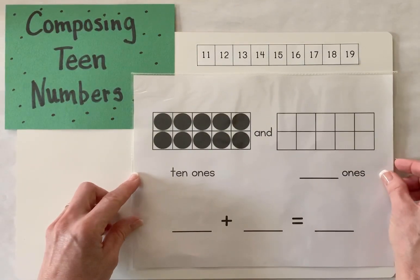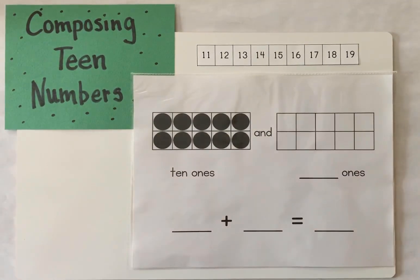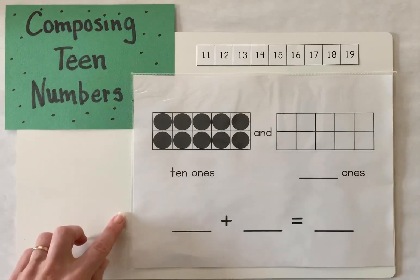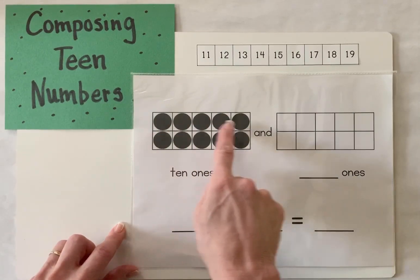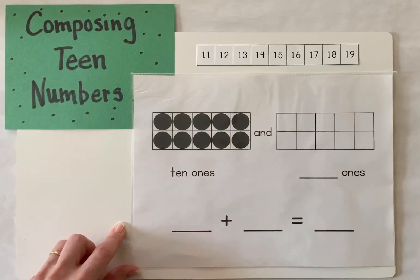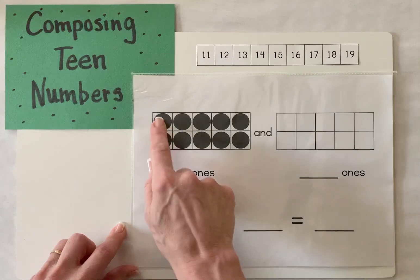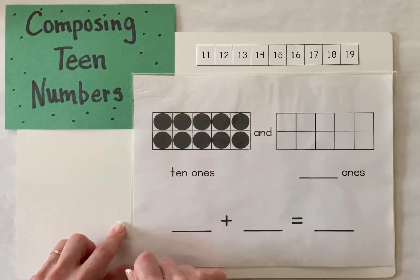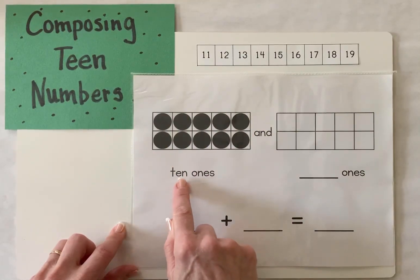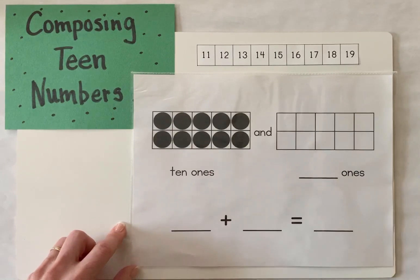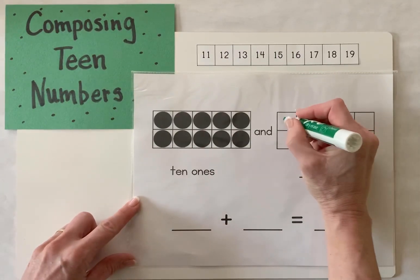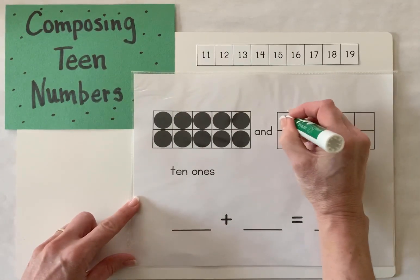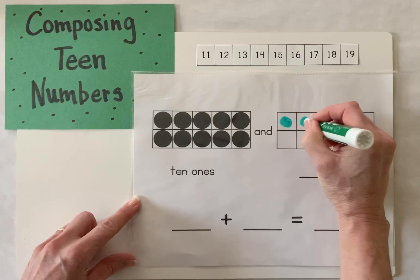First, we're going to use our 10 frames. If you remember, a 10 frame holds 10 items. So this 10 frame is filled in — I can see that I have 10 ones here. Now I'm going to put more ones in my other 10 frame.